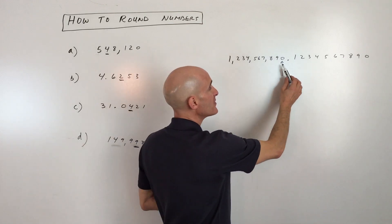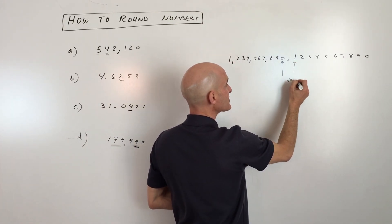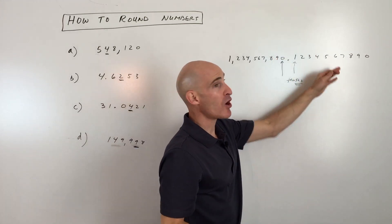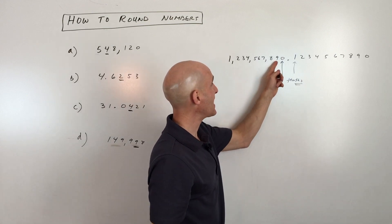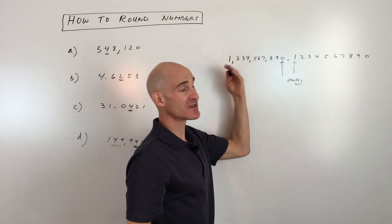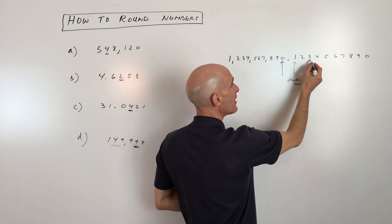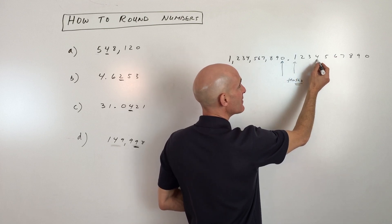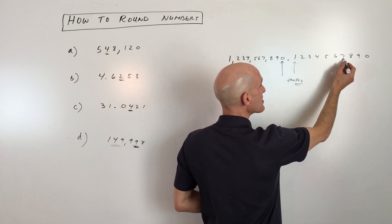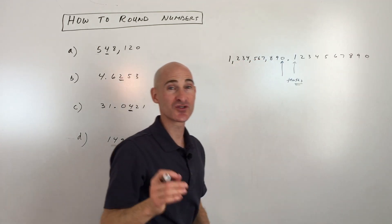If you go to the right of the decimal point, it starts with tenths. Notice the '-ths' ending — that tells you the value is smaller than one. Whereas 'tens' on the left has no '-ths,' meaning it's greater than one. Continuing right: hundredths, thousandths, ten thousandths, hundred thousandths, millionths, ten millionths, hundred millionths, billionths, ten billionths — all with that '-ths' ending.